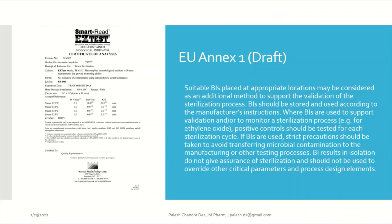Now let's talk about the new Annex 1 draft requirements. They state that suitable BIs placed at appropriate locations may be considered as an additional method to support the validation of the sterilization process. BIs should be stored and used according to the manufacturer's instructions — the temperature and handling conditions mentioned by the vendor need to be followed strictly. Where BIs are used to support validations and/or to monitor the sterilization process, a positive control should be tested for each sterilization cycle.